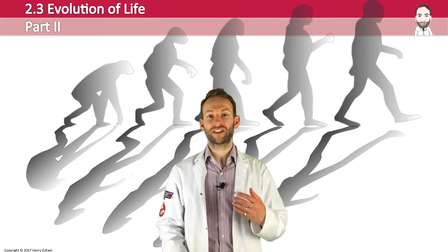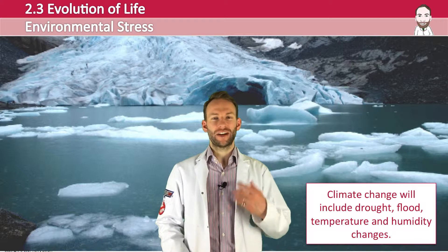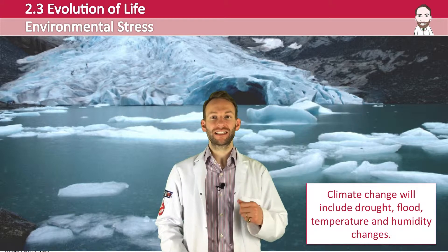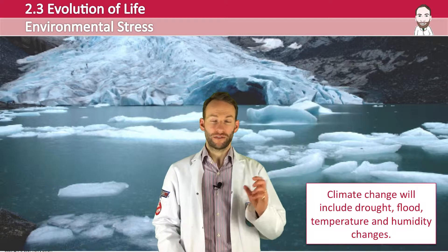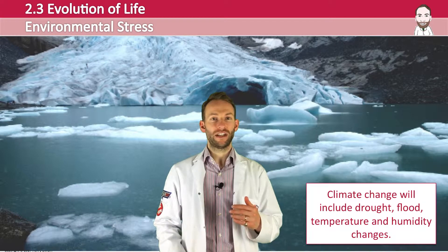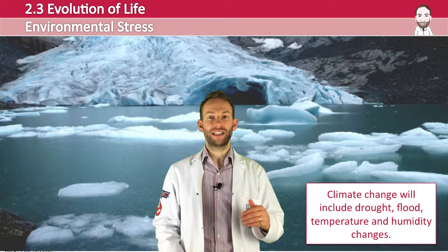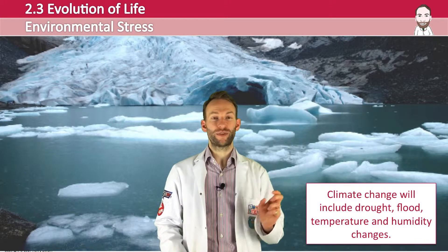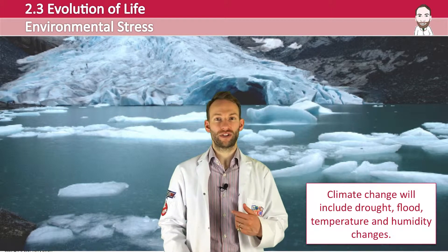Let's start off talking about environmental stress. Global climate change affects entire ecosystems and will alter the habitats and niches that are available. This means that some alleles which code for particular traits will become much more common in a population as others fade away — a change in selection pressures. Climate change might include drought, flood, temperature and humidity changes, all of which will change the allele frequency in a population.